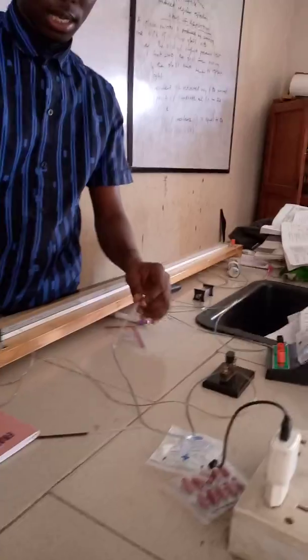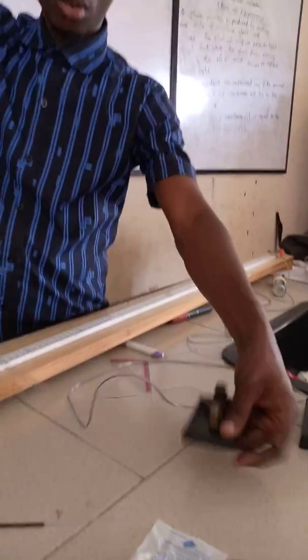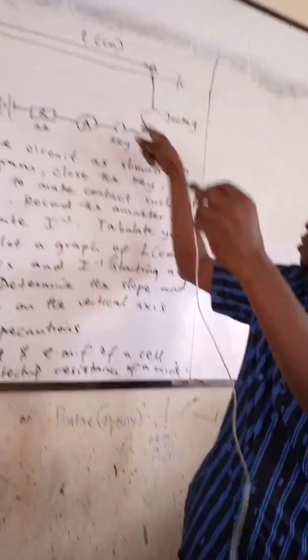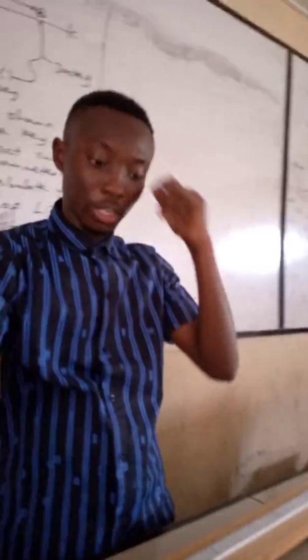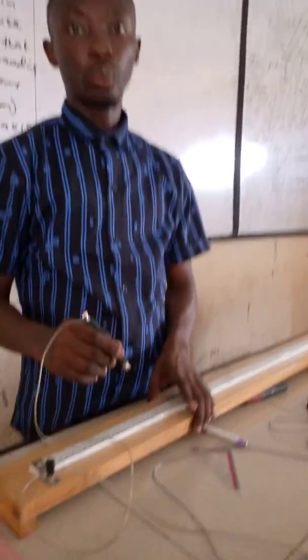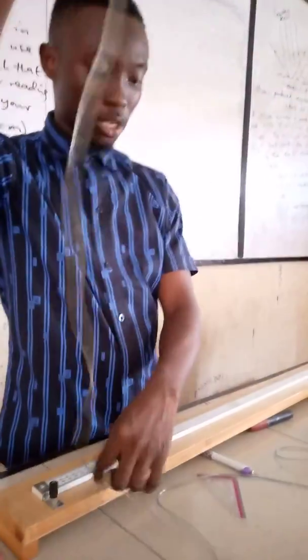Where you are going to plug your connecting wire is to the negative side of the ammeter. Last but not least, the other end of the key is connected to the jockey. What we are using the jockey to do is to make contact with the potentiometer. This is our connection.